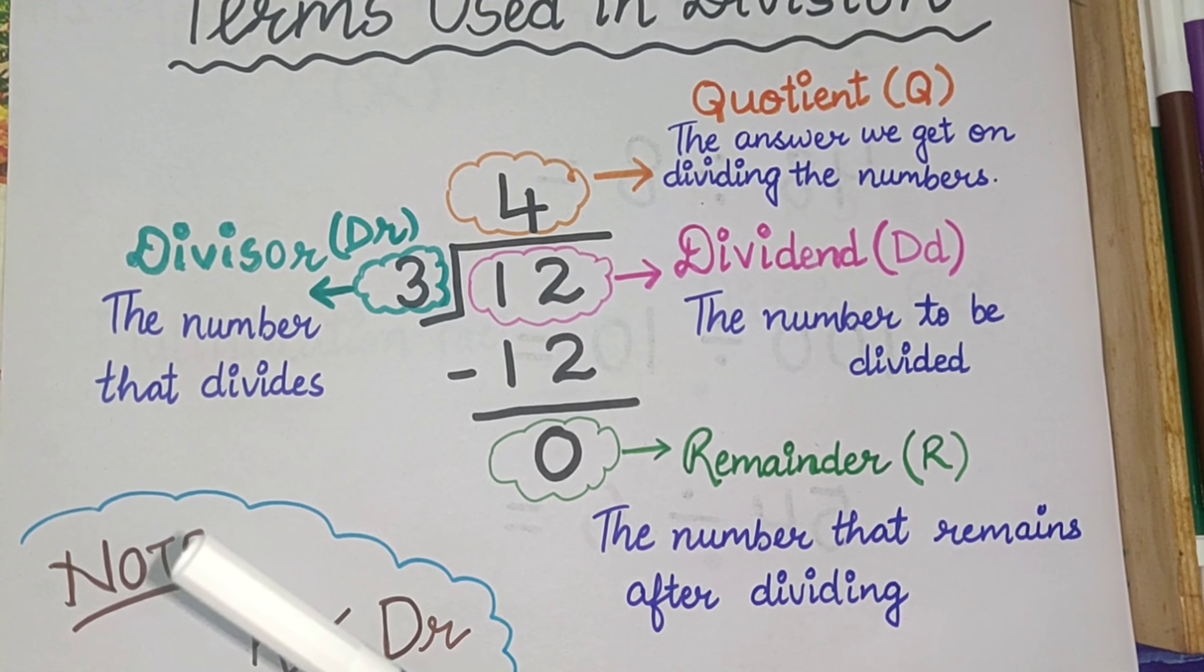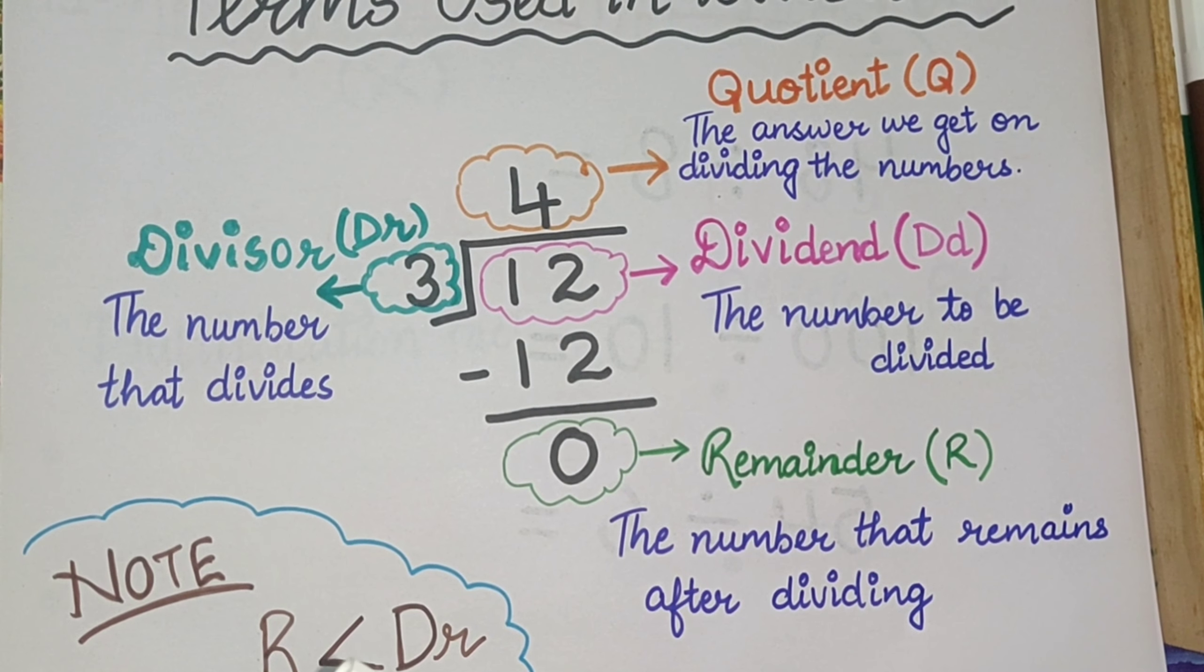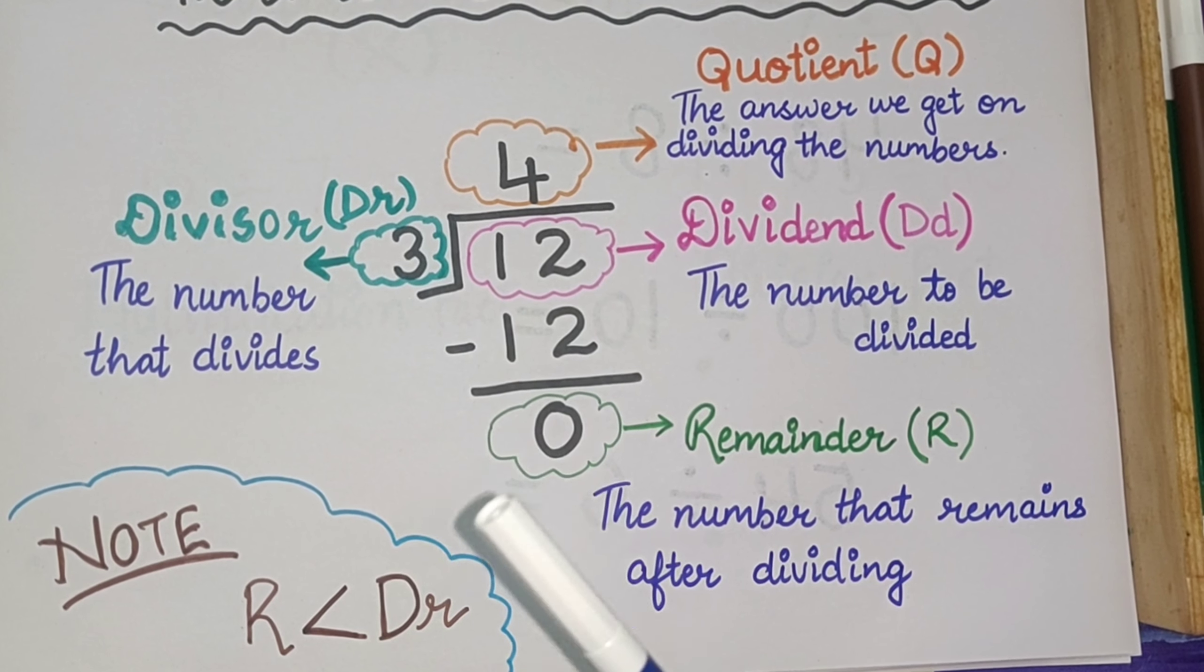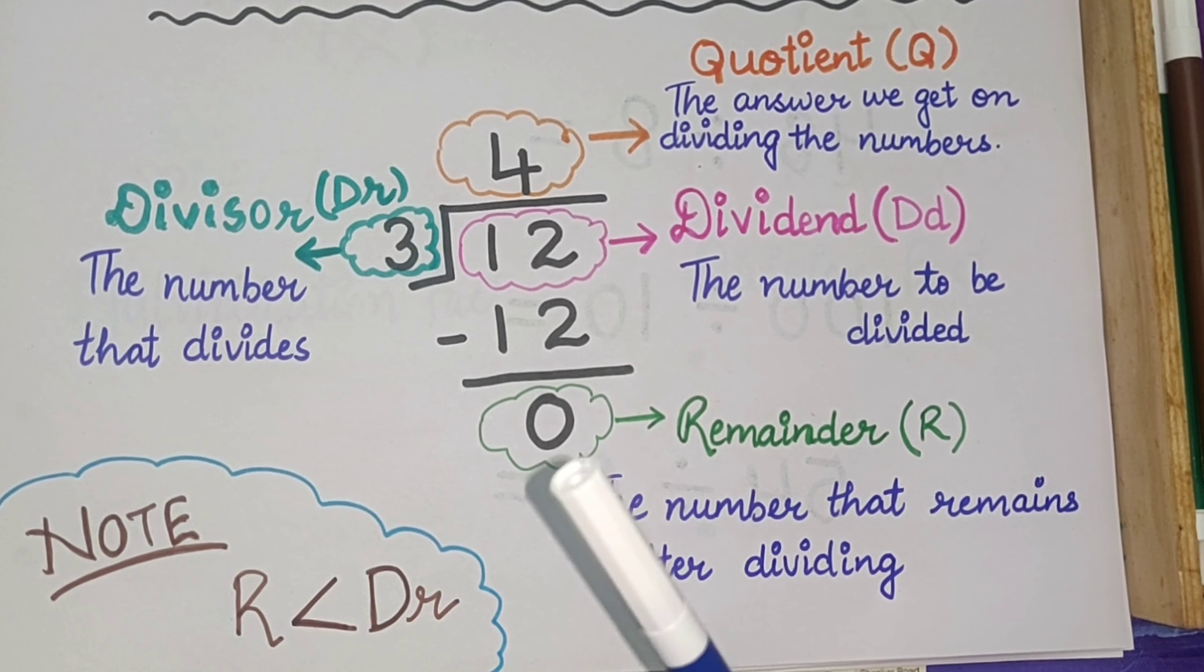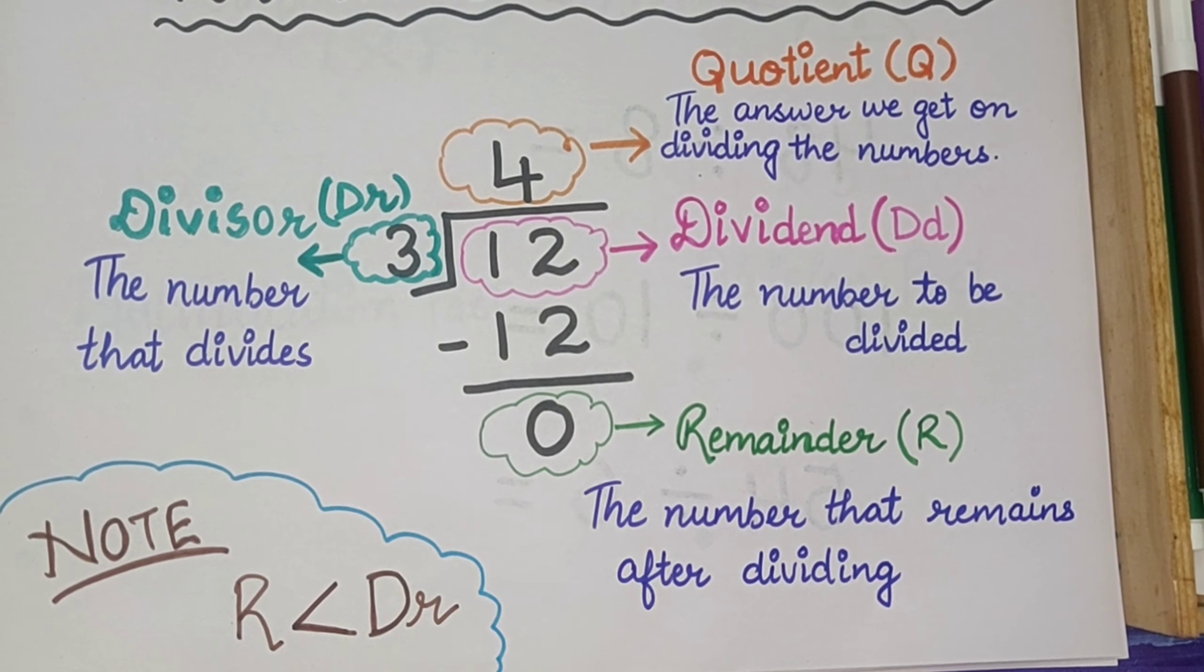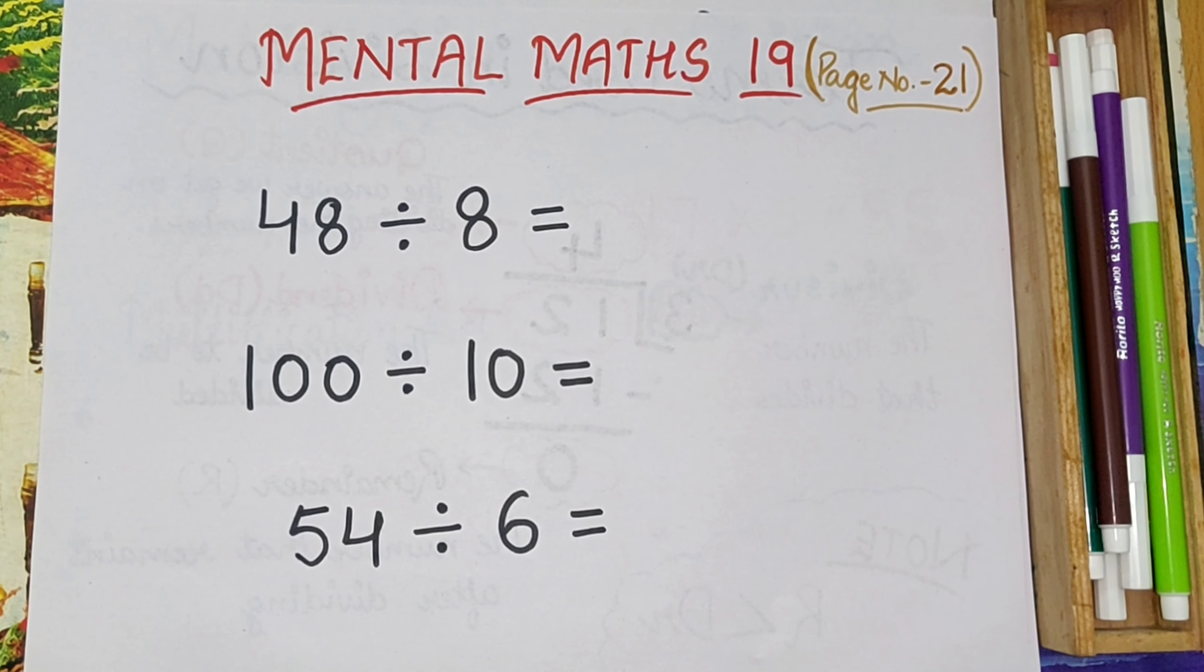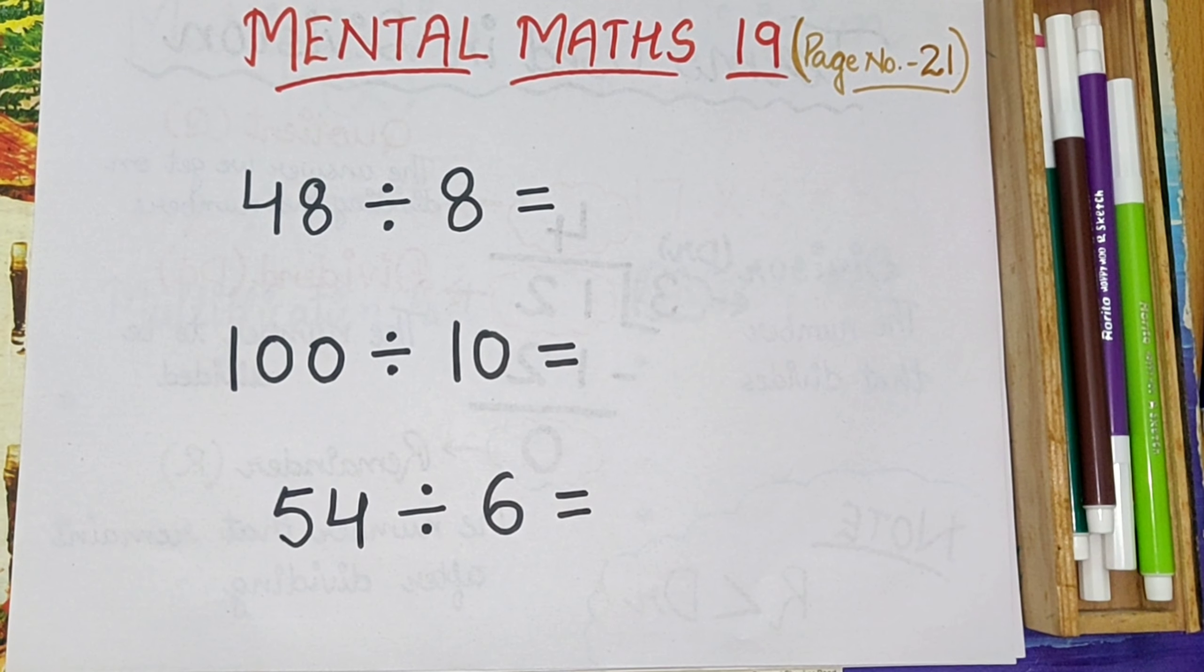Now we need to note here that remainder is always smaller than divisor. Like in this you can see 0, 0 is smaller than 3. So remainder is always smaller than divisor. Now we are going to do Mental Maths 19 that is given on page number 21. Are you ready?